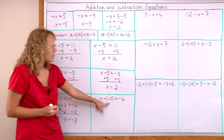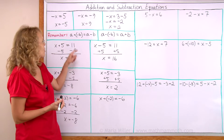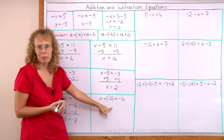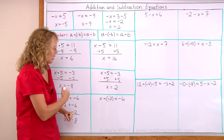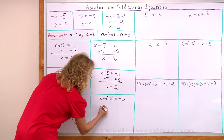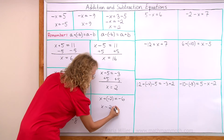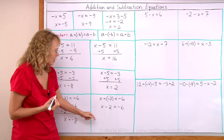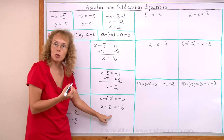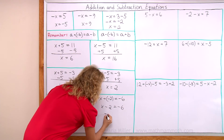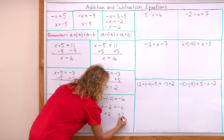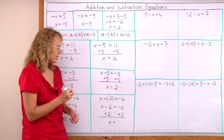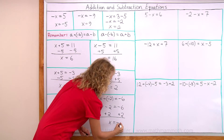Again, I have a plus and a minus — adding a negative number. I'll simplify using this shortcut: I change it to a subtraction, so it becomes x minus 2. This side does not change. Now I actually solve it by adding 2 to both sides, which leaves x alone, and negative 6 plus 2 is negative 4.